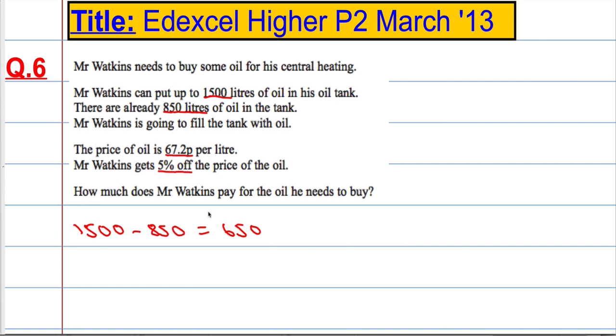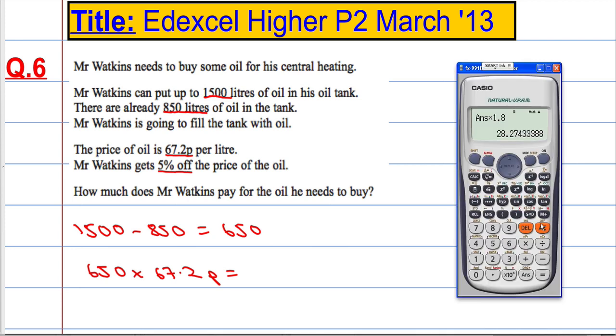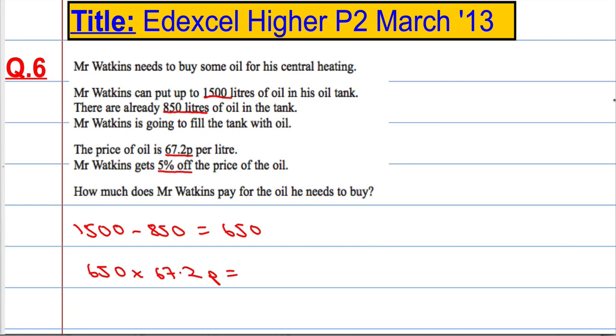The price of oil is 67.2 pence per litre. So how much is that going to cost him? 650 multiplied by 67.2p is going to equal, get the calculator out for this, so 650 multiplied by 67.2p is 43680. So let's write that down, 43680. Remember that's in pence, which is equal to, divide it by 100 to get into pounds, £436.80.